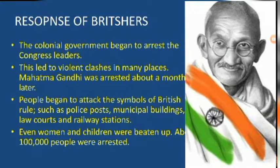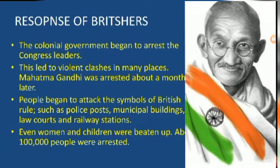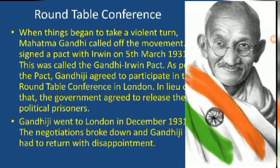In response to the Salt March, the colonial government began to arrest Congress leaders, which led to violent clashes in many places. Mahatma Gandhi was arrested about a month later. People began to attack the symbols of British rule such as police posts, municipal buildings, law courts, and railway stations. Even women and children were beaten up and about one lakh people were arrested.